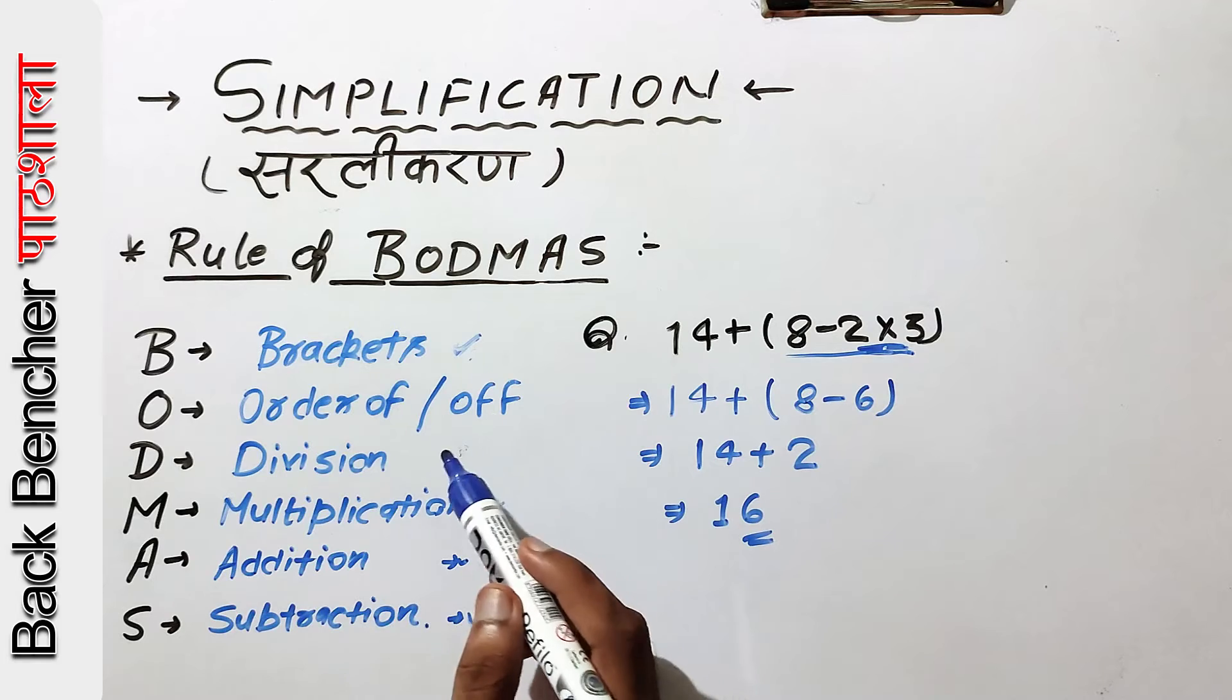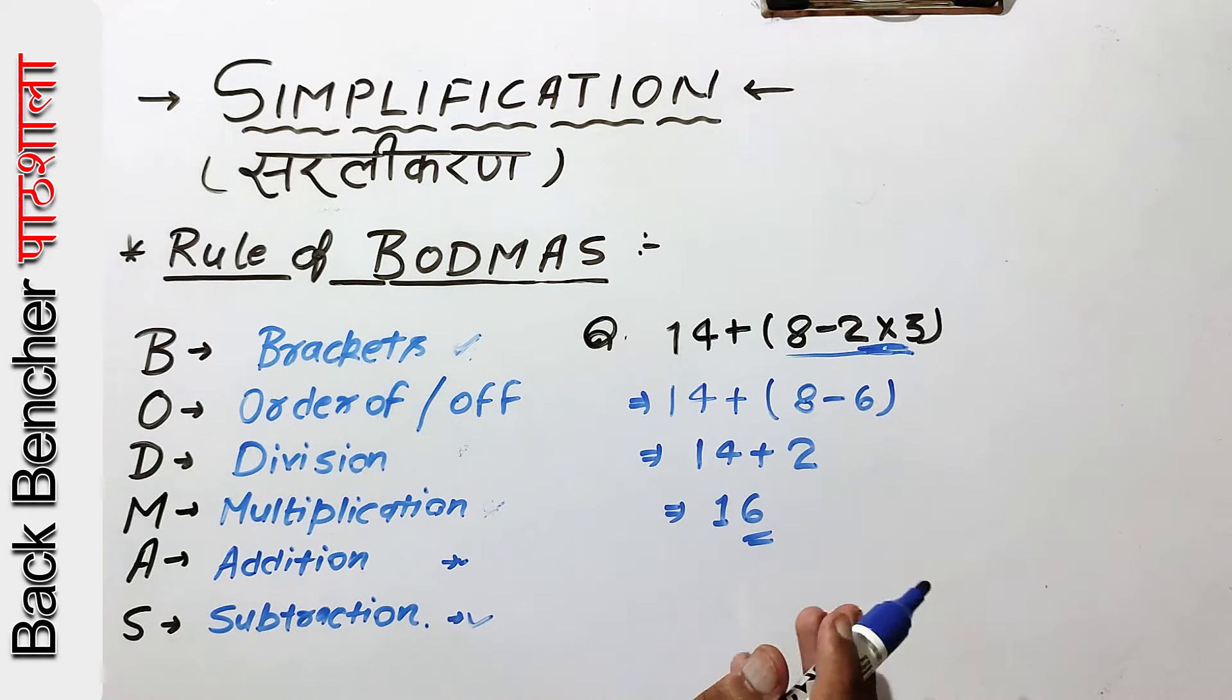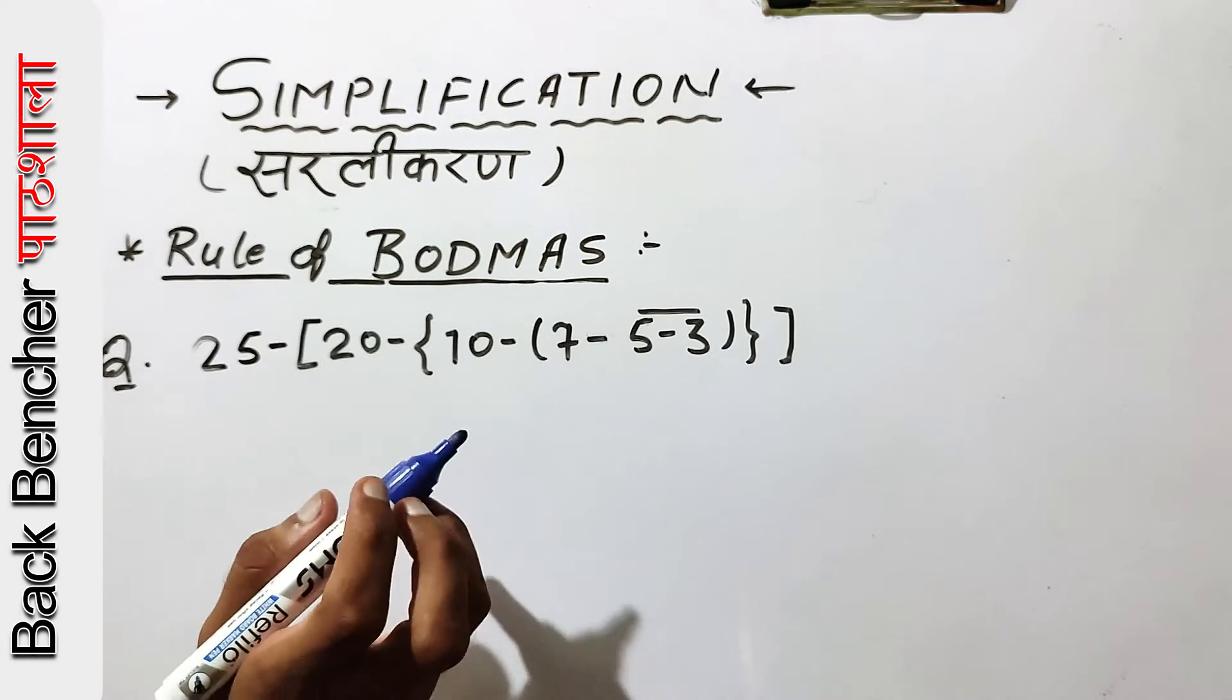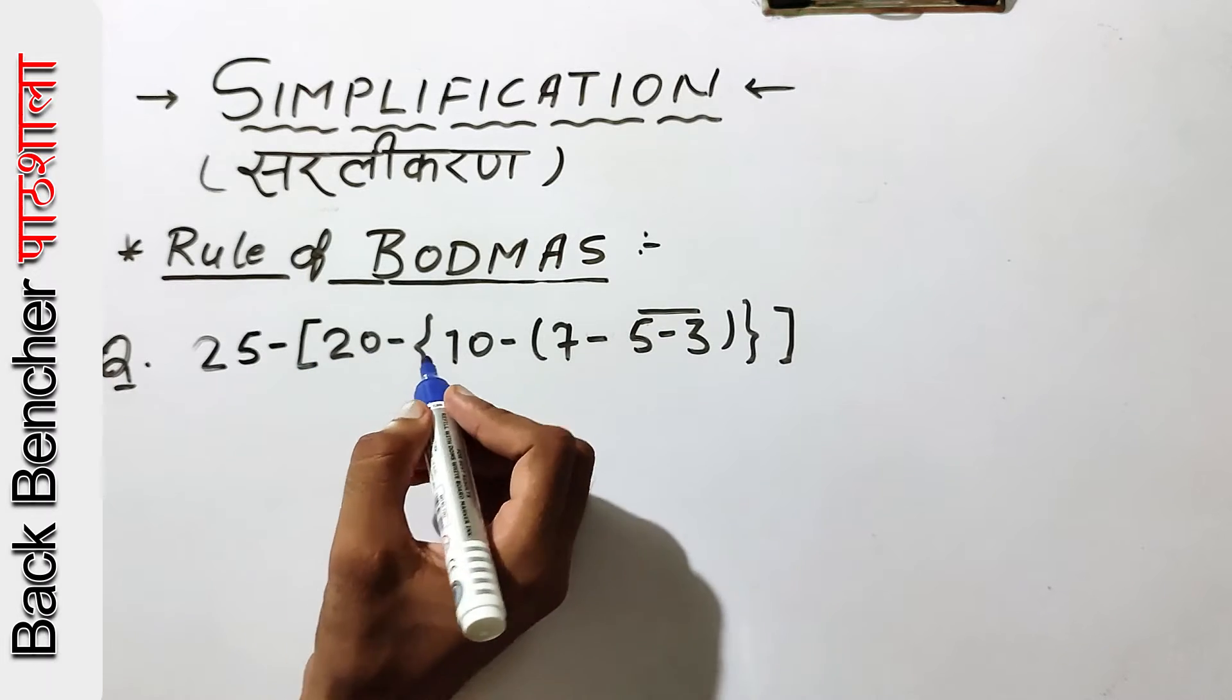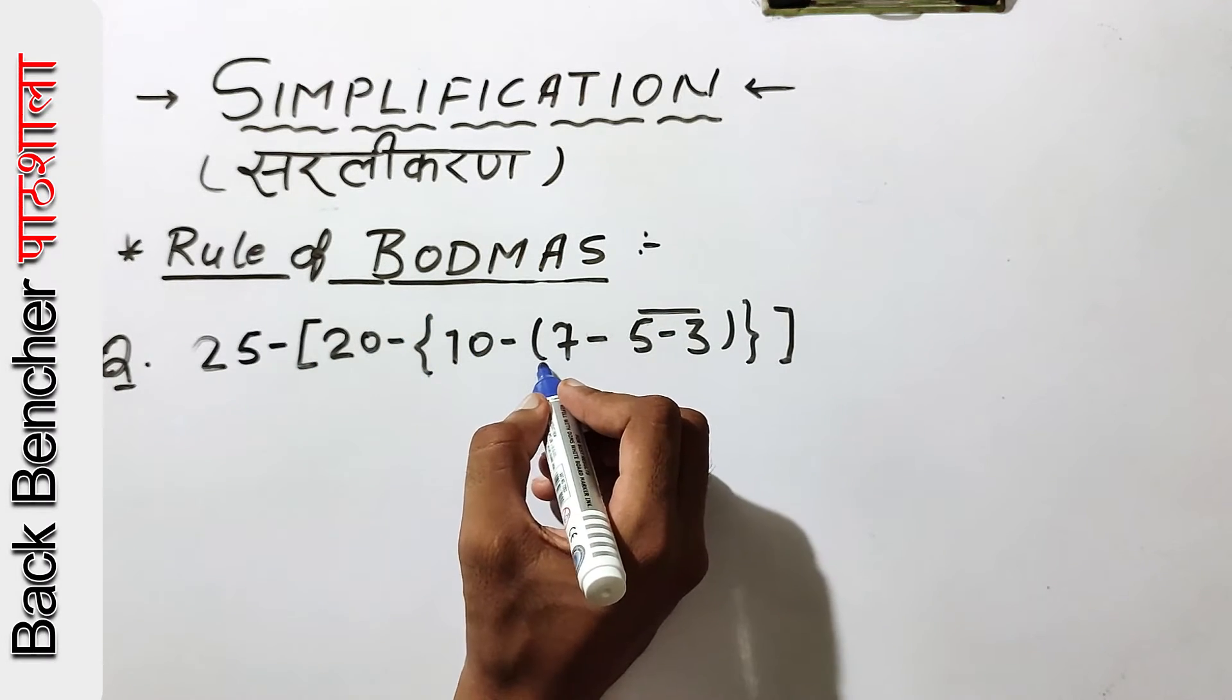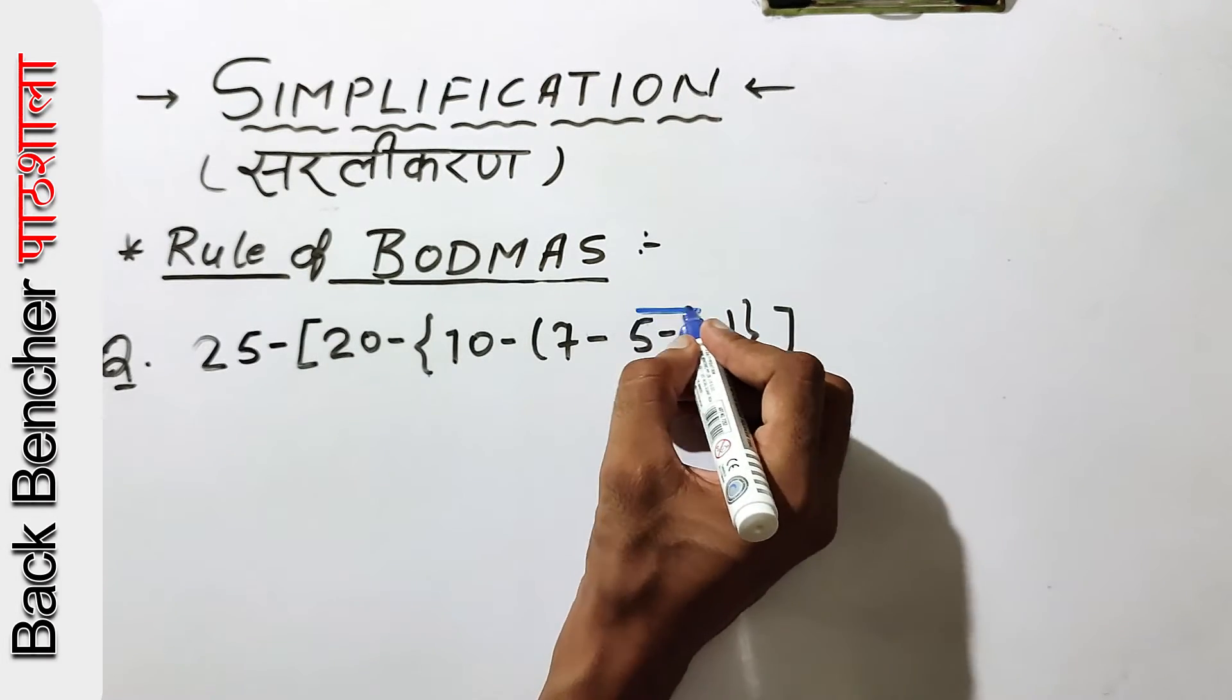If there are other signs in brackets, we will see which ones are the priority. I have a question using all the brackets. We will solve the brackets. We will start with 25. After that, we will get another bracket and solve the brackets.